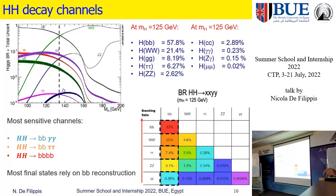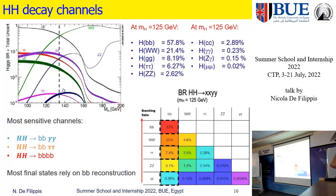Some systematics are related to modeling of the background — we have to be sure that we can control the background; otherwise if we observe something and we're not sure about the background, we would get a wrong measurement. This analysis was able to constrain kappa_lambda between minus 2.5 and 9.5. Kappa_lambda equal to 1 is the standard model.